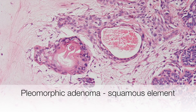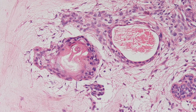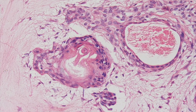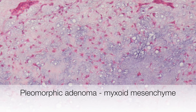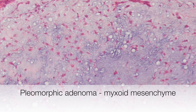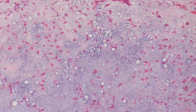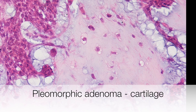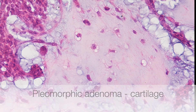In this area the epithelial element shows squamous differentiation with keratinization. This is the mesenchymal element of the pleomorphic adenoma showing myxoid features. In this area the mesenchymal component shows cartilaginous differentiation.